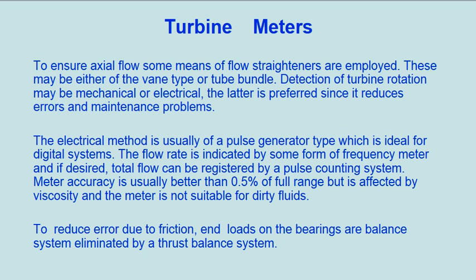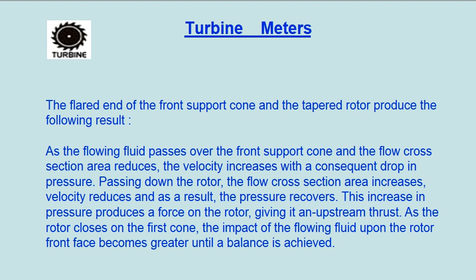To reduce error due to friction, end loads on the bearings are eliminated by a thrust balance system. The flared end of the front support cone and the tapered rotor produce the following result: as the flowing fluid passes over the front support cone and the flow cross section area reduces, the velocity increases with a consequent drop in pressure.